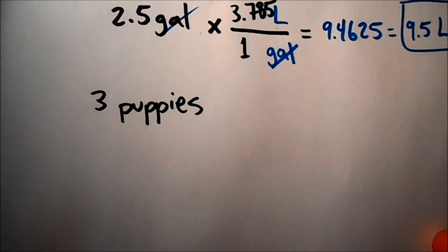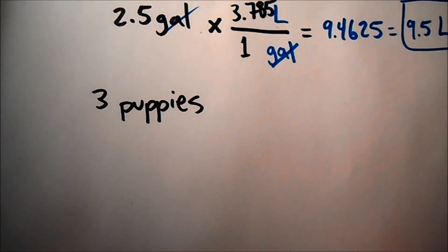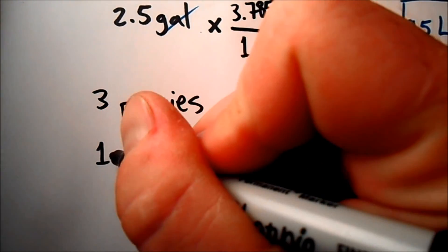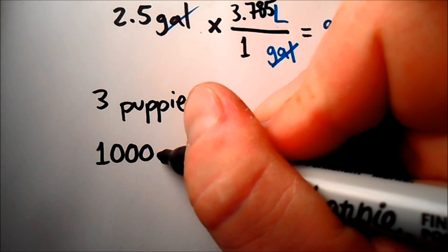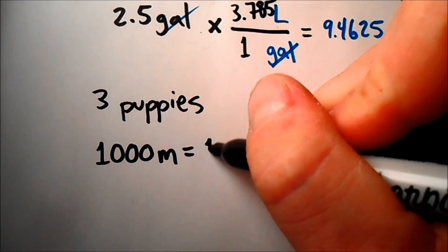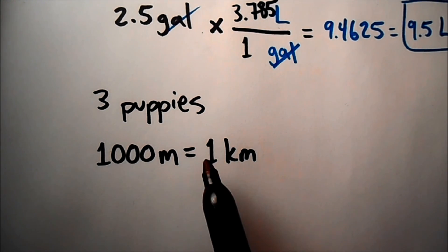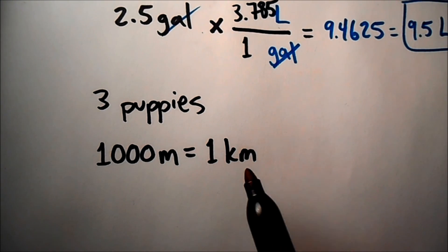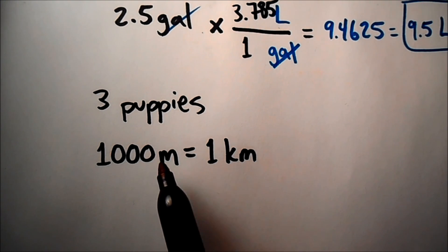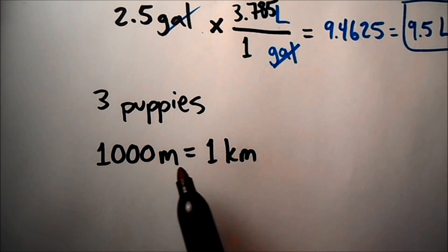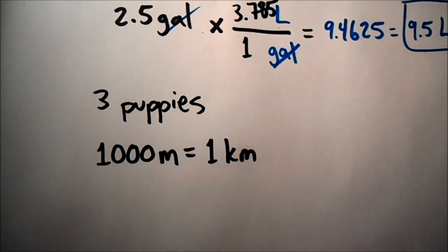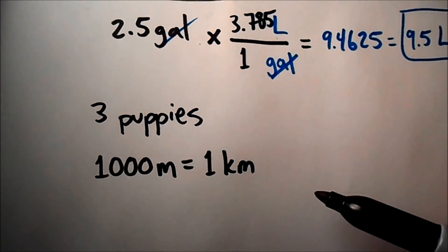If we define something exactly, then it will have infinite sig figs. For example, you might know that 1,000 meters is exactly 1 kilometer. There's no measuring error there, because both of these ideas we invented. We invented the idea of meters, and we invented the idea of kilometers, and we also invented them so that way they would be exactly equal to these values compared to each other.